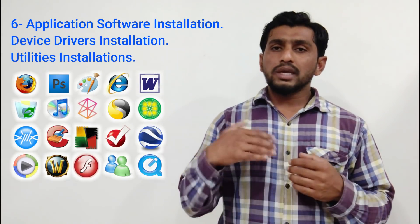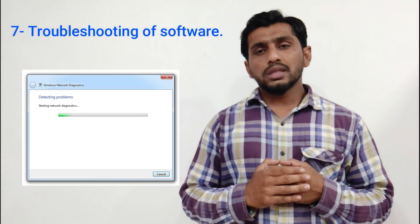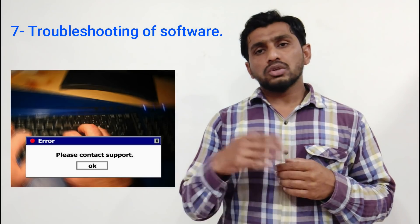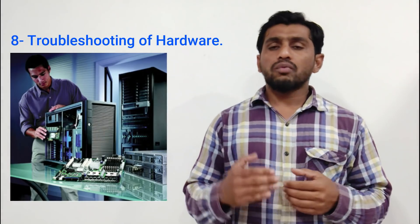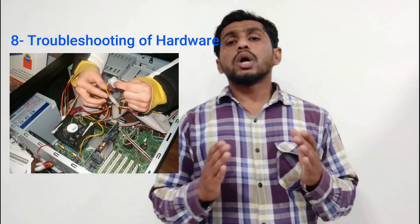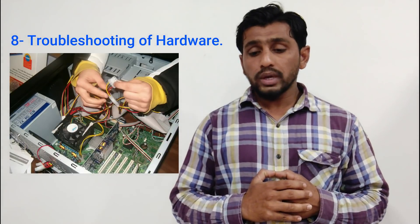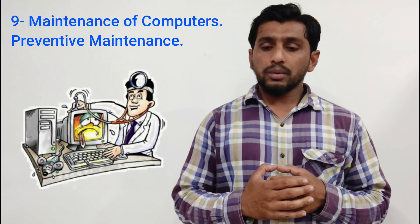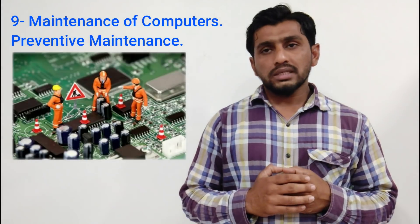The fifth topic is application software installation, including drivers installation and utilities installation. Next is troubleshooting of software — if there is a problem with the computer, you will troubleshoot it at the software level. Then troubleshooting of hardware — if the problem is not in software, you troubleshoot at the hardware level. After that is maintenance: how to do preventive maintenance and what activities you should perform.